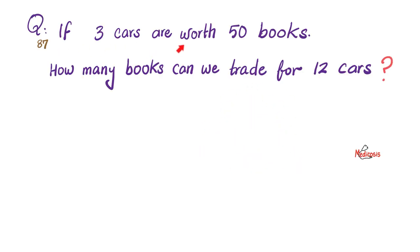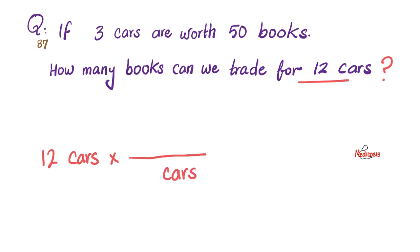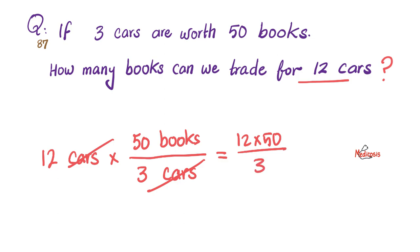Here's another question: if three cars are worth 50 books, how many books can we trade for 12 cars? Start with what we know — 3 cars gives 50 books — and begin with 12 cars. Multiply by the conversion factor, putting cars in the denominator to cancel: 12 × 50 ÷ 3 = 200 books. So in order to get 12 cars, you need to give 200 books.